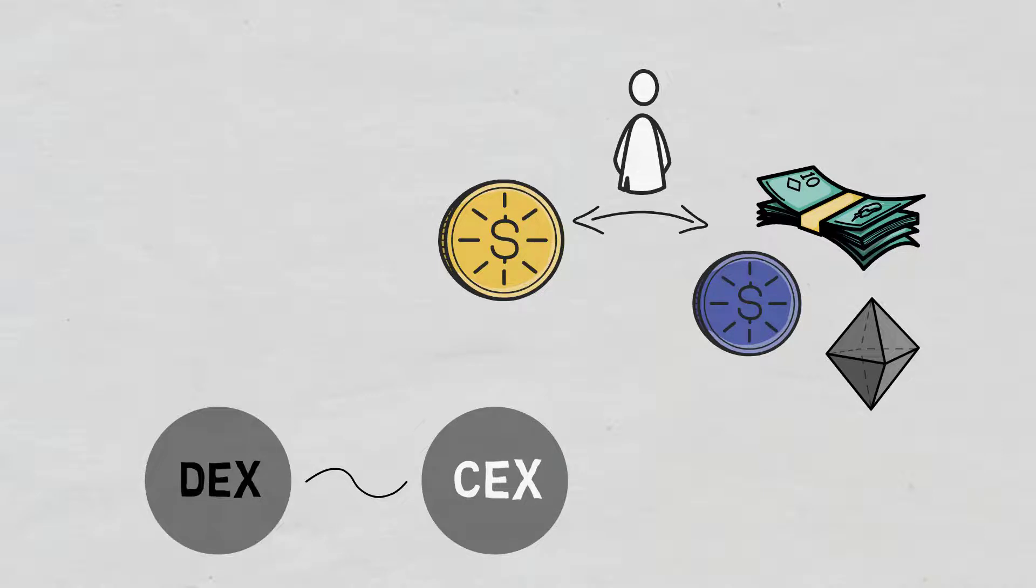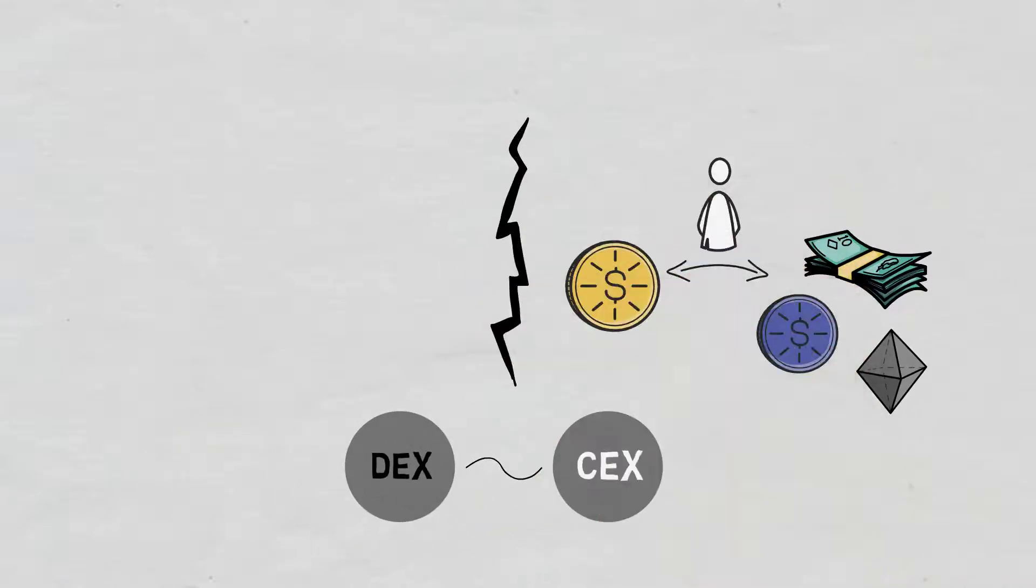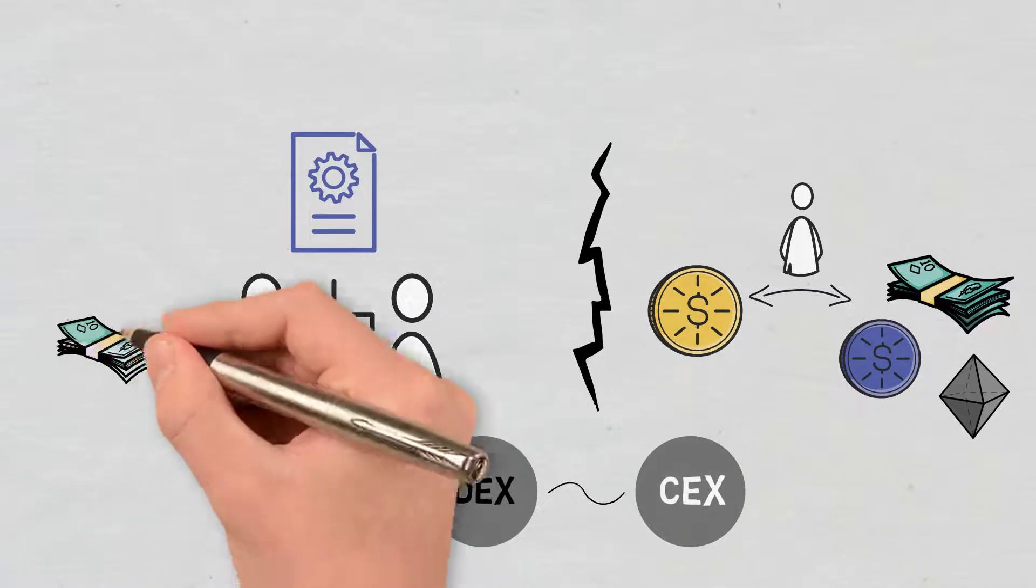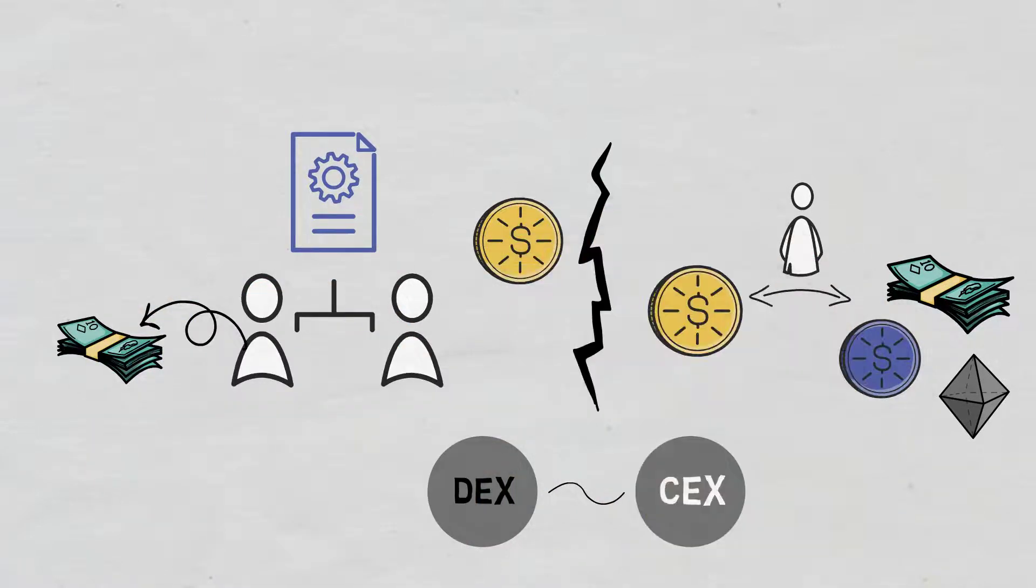One major difference between the two types of exchanges is that in the case of a DEX, the third party that oversees the asset transfer and security is substituted for a distributed ledger or blockchain. Moreover, users don't need to give up custody of their funds, having control over them at all times.